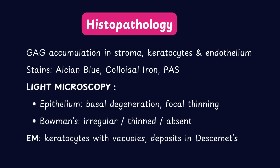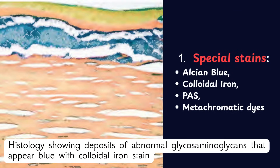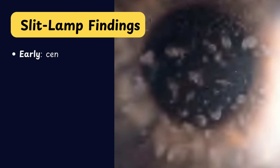Together, these histological features reflect the defective synthesis of keratan sulfate and explain the progressive stromal clouding seen clinically. The deposits of abnormal glycosaminoglycans appear blue with colloidal iron stain. Other special stains used for macular dystrophy include Alcian blue, colloidal iron, PAS stains, and metachromatic dyes.